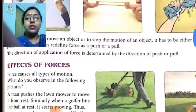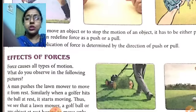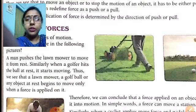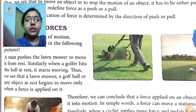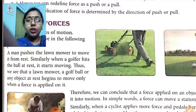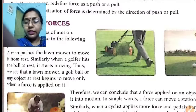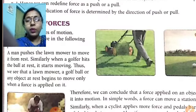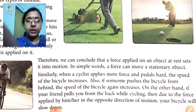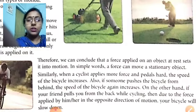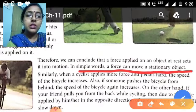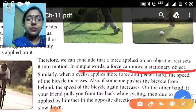Now we come to the topic: effects of forces. Forces cause all types of motion. A man pushing a lawn mower moves it from rest, and a golfer hitting a ball sets it into motion. As soon as force is applied on an object at rest, it starts to move. So the first effect is: a force applied on an object at rest sets it into motion. In simple words, a force can move a stationary object.